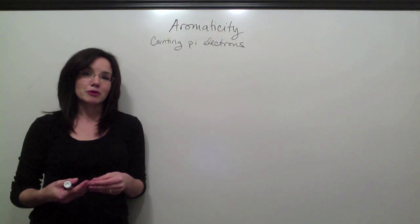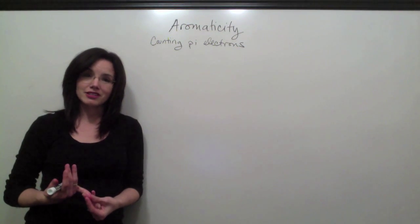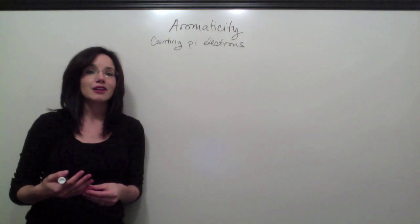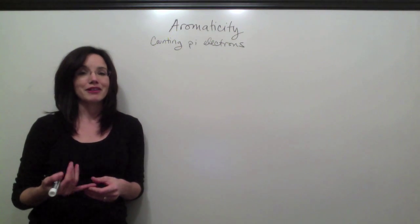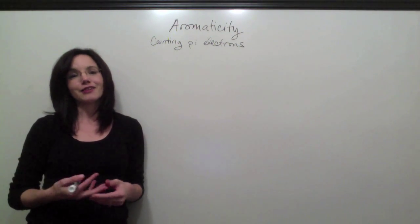This video begins on step four, which is counting the number of pi electrons in the compound, and then using that number to determine whether the compound is aromatic, non-aromatic, or anti-aromatic.